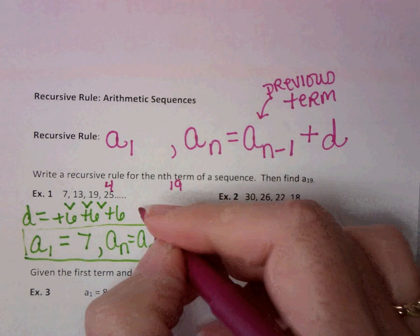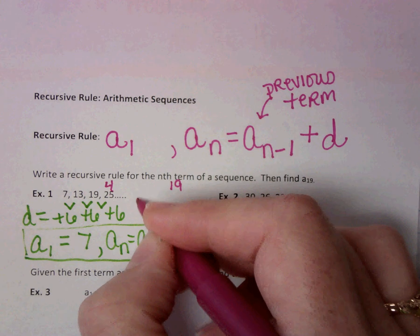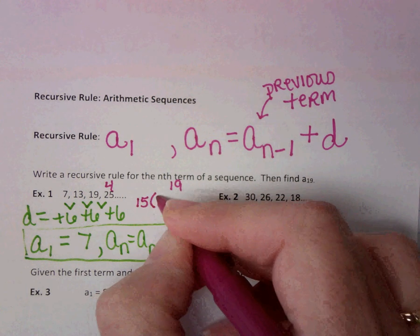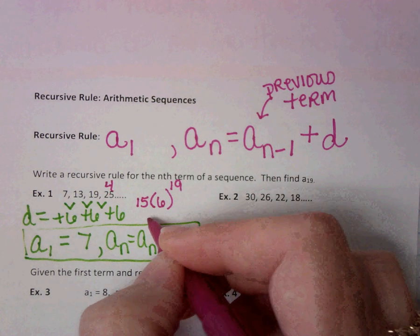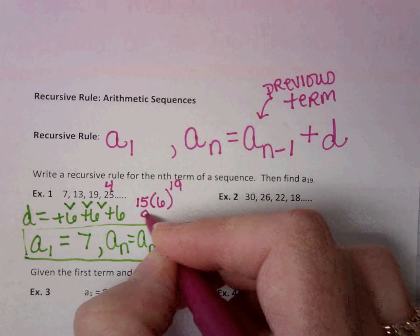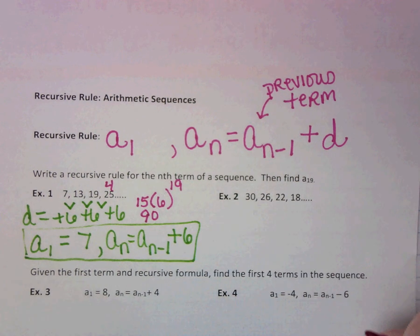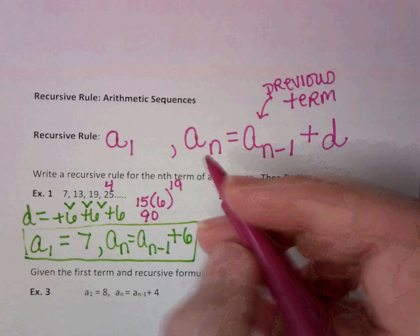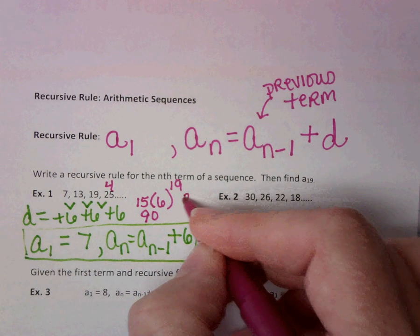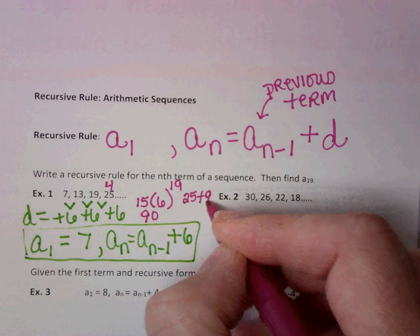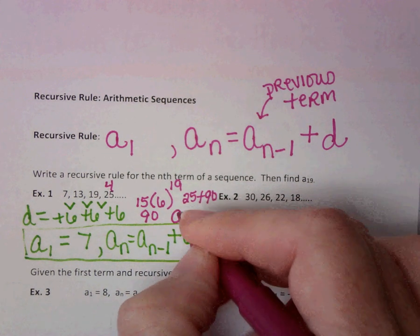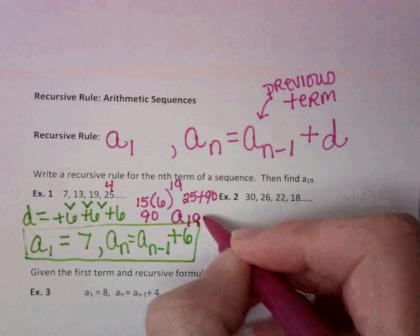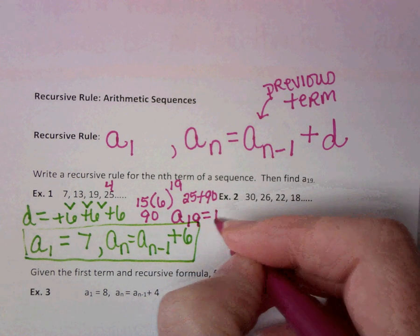So if I have 15 terms and I'm adding 6 each time, could I do 15 times 6, which is 90? And then could I add 90 to 25? I sure could. So 25, the last term, plus the common difference of 6 every time, is going to give me that a sub 19 is 115.